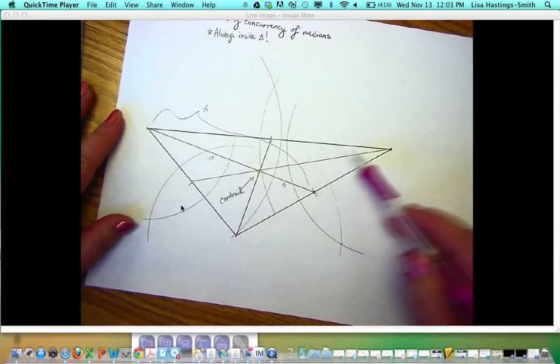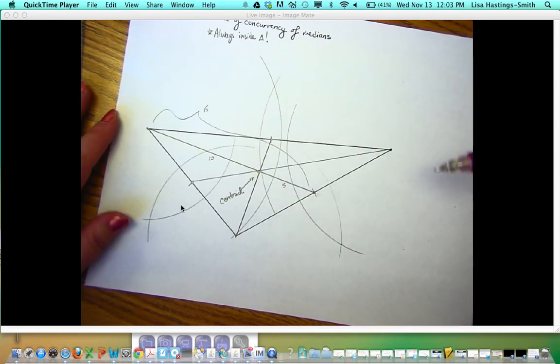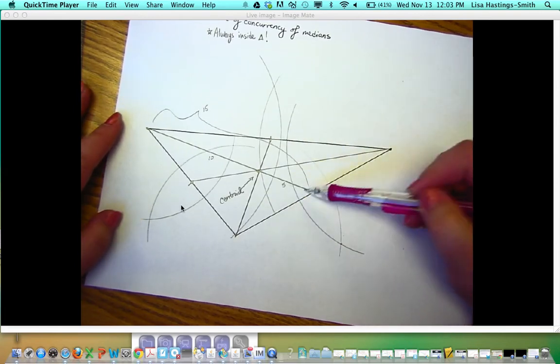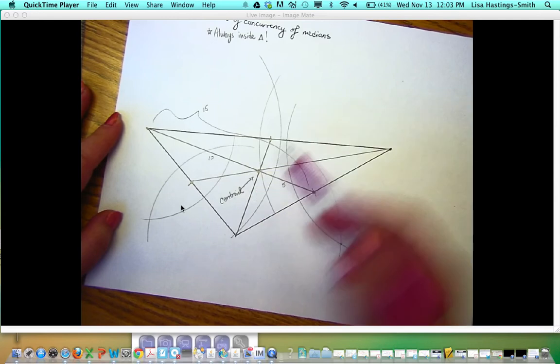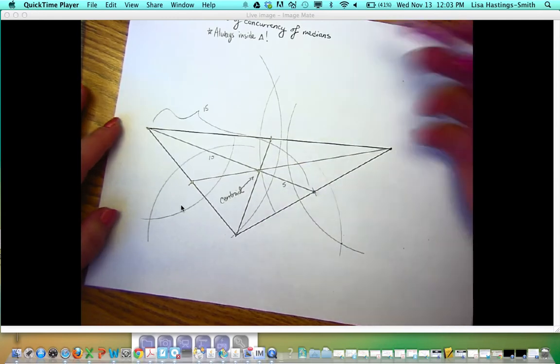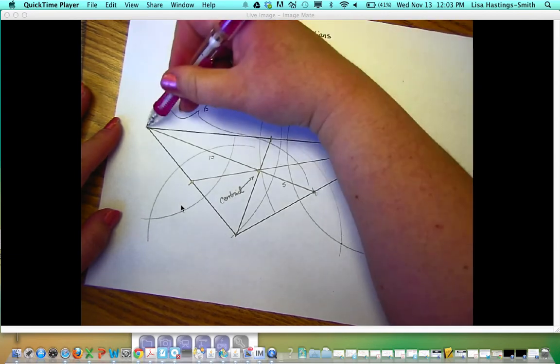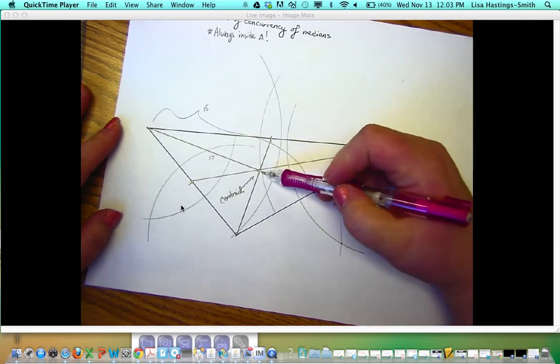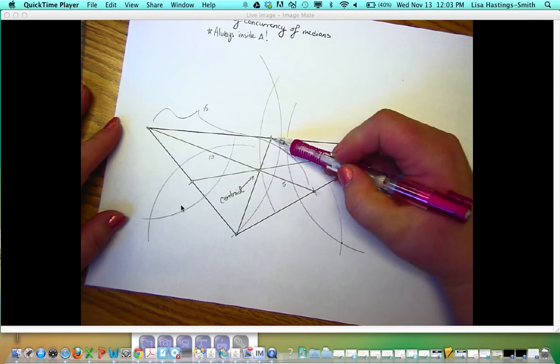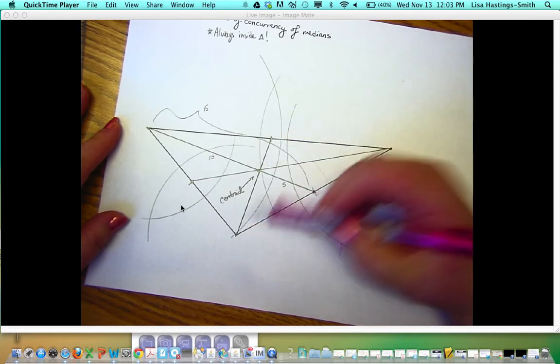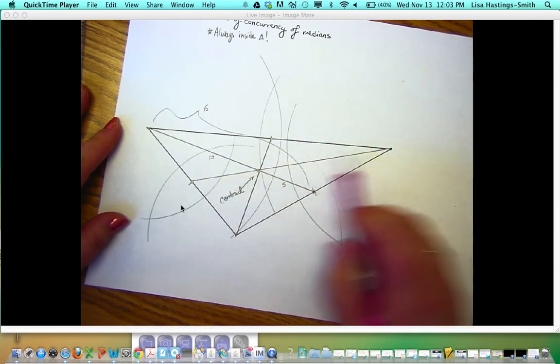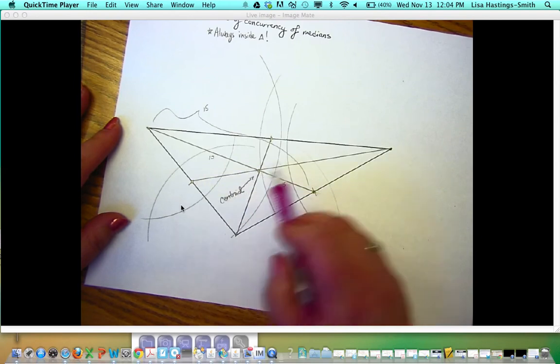All the medians can be different lengths, so if this one's five, it doesn't necessarily mean this one's going to be five or that one's going to be five. Notice also the centroid is always closer to the midpoint than it is to the vertex. So the centroid on this median is closer to the midpoint of the side than it is to the vertex. And the centroid on this median is closer to the midpoint of the side than it is to this vertex.